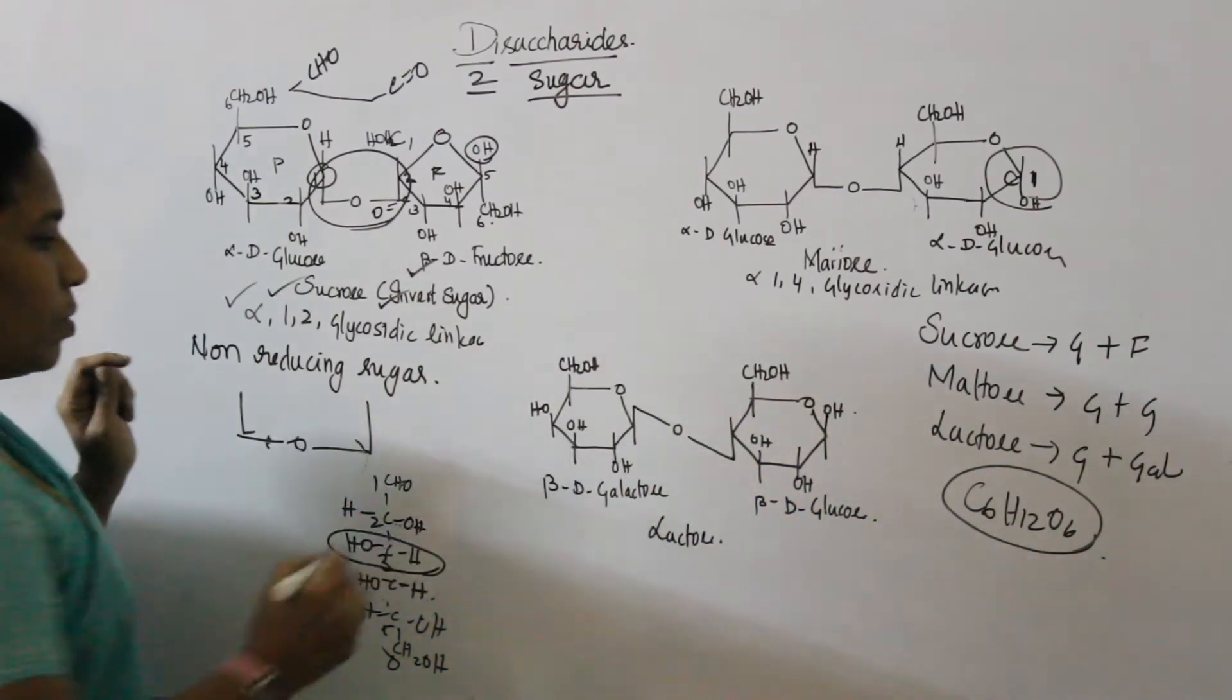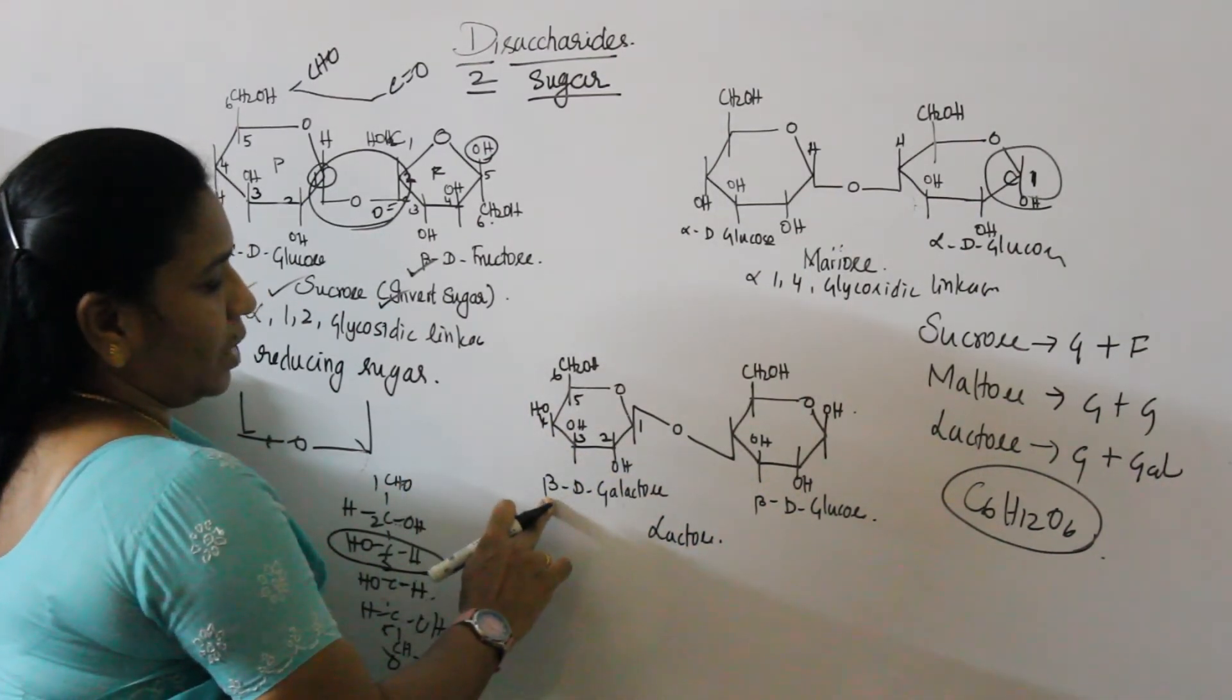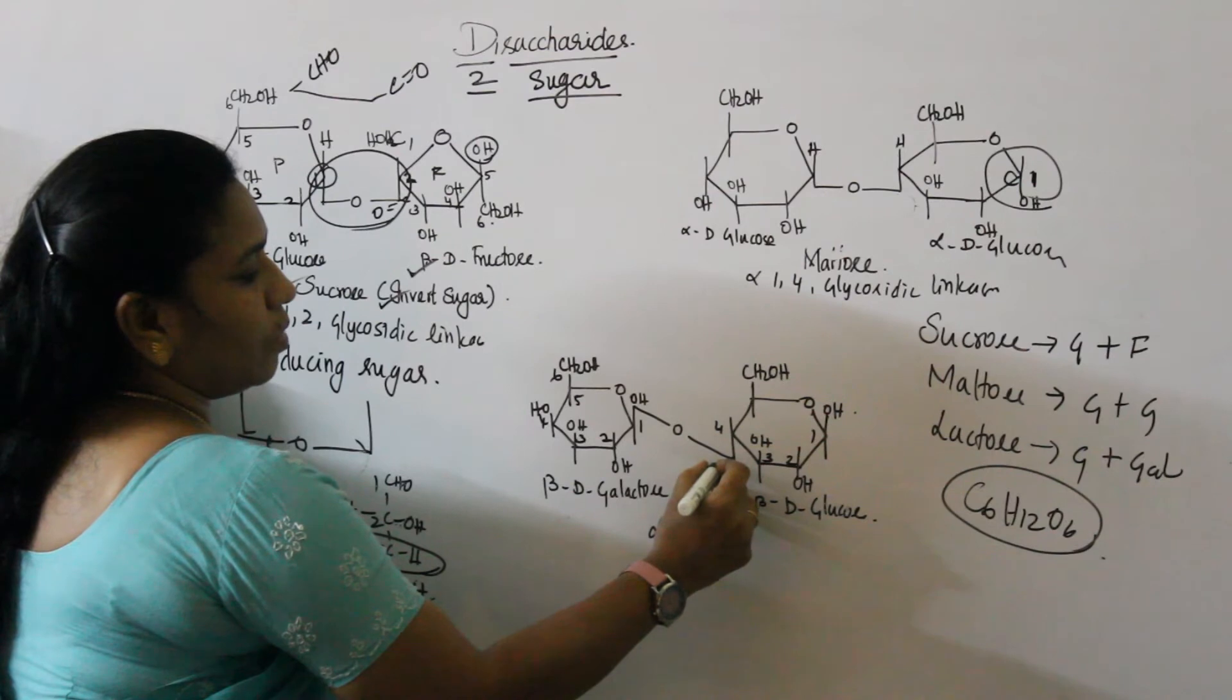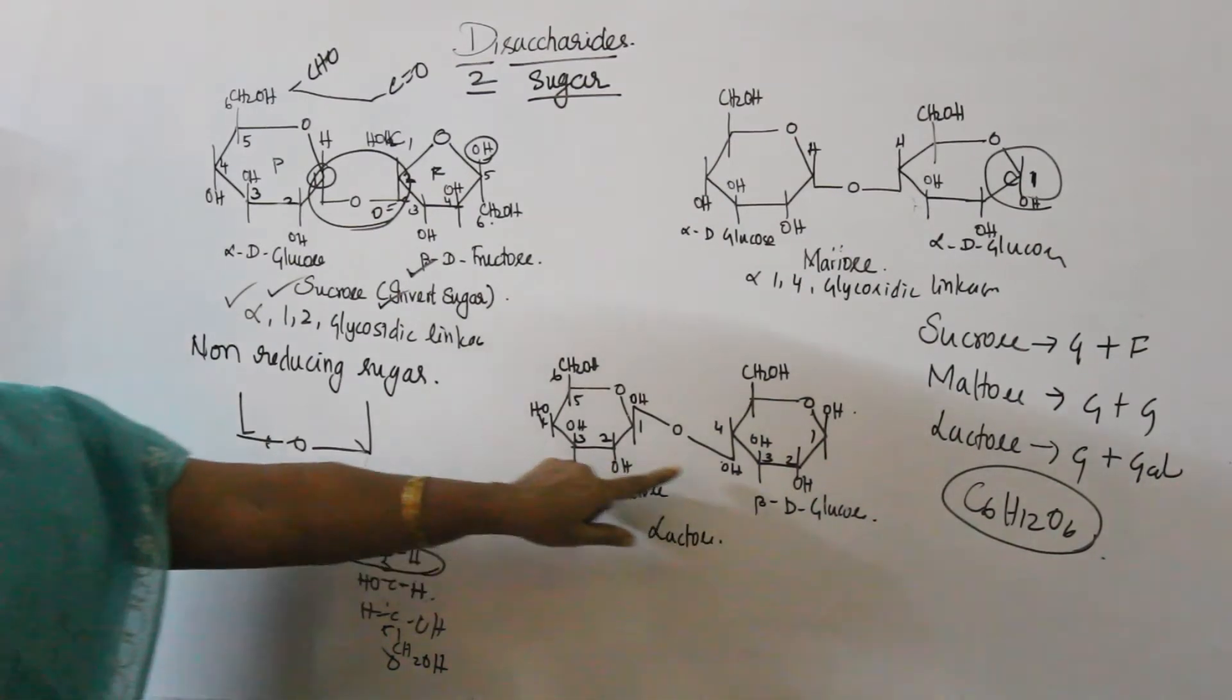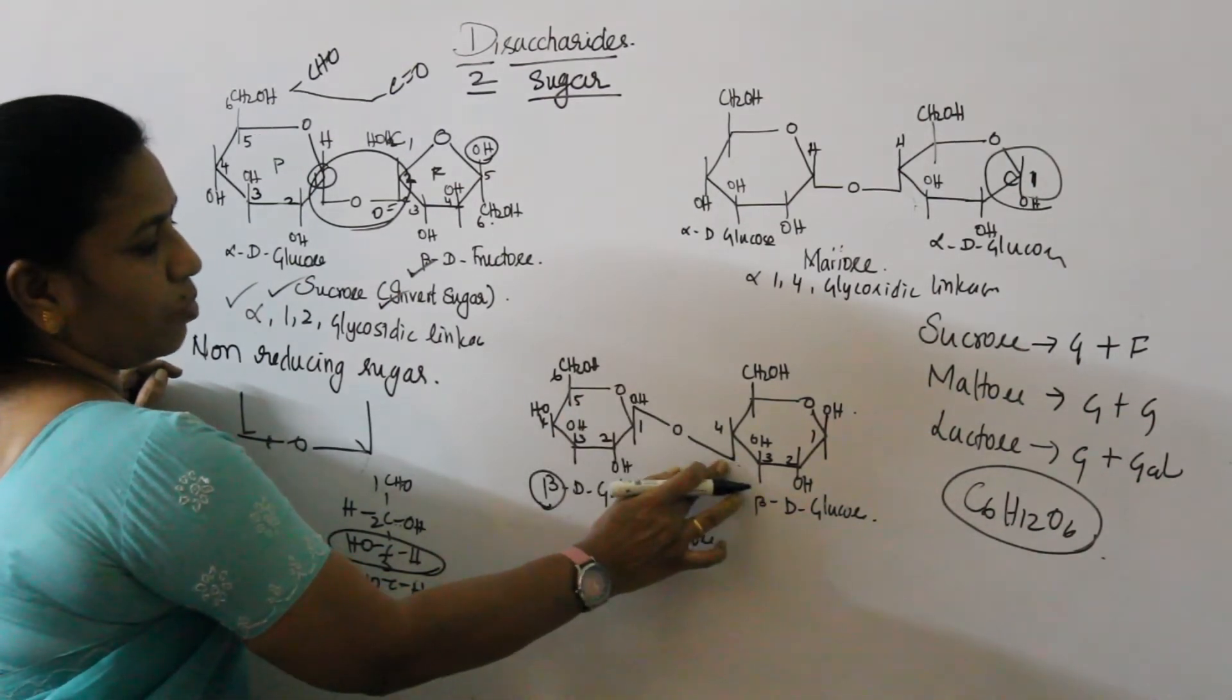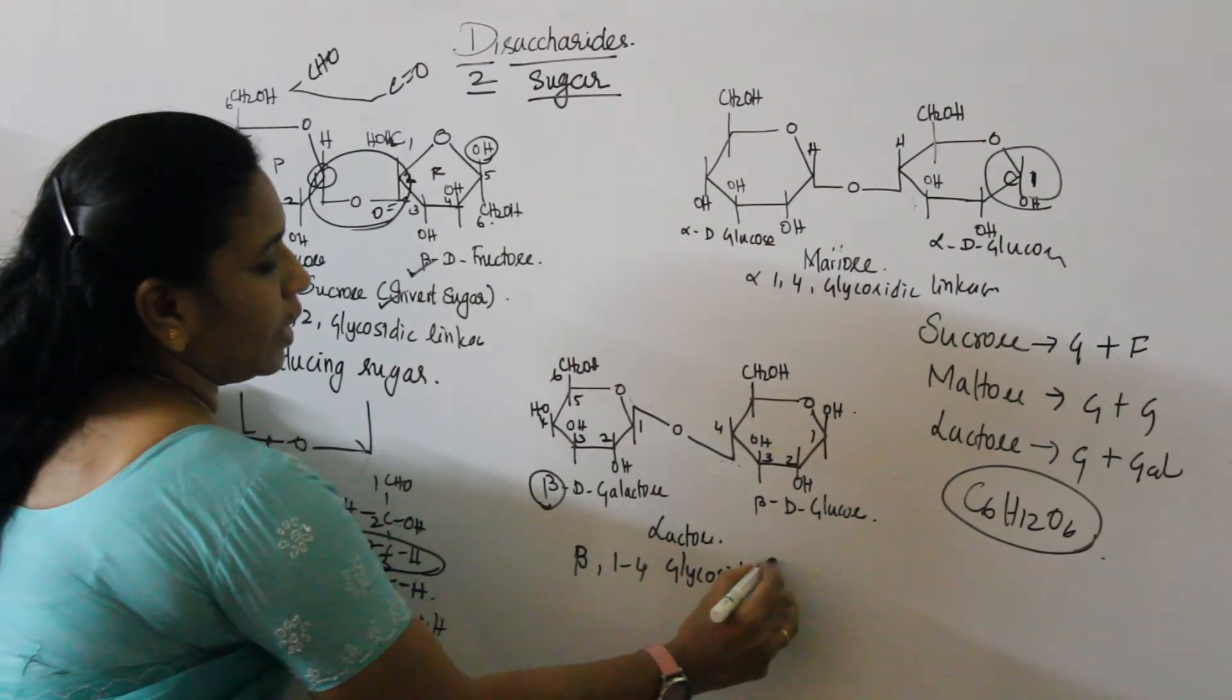In galactose, on the fourth carbon, OH is on the left side. In the fourth carbon, OH on the left side is galactose. In the third carbon, OH on the right side is glucose. This is the minute difference between glucose and galactose. This is galactose - 1, 2, 3, 4, 5, 6. You can see the third OH and fourth OH. This is galactose and beta. Why beta? OH is on the upper side. That is beta-D galactose. OH is on the left side. The fourth carbon is on the left side.